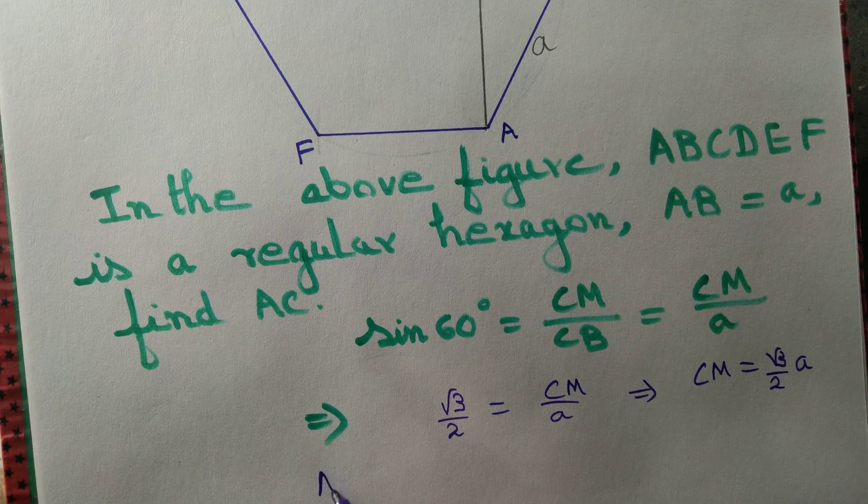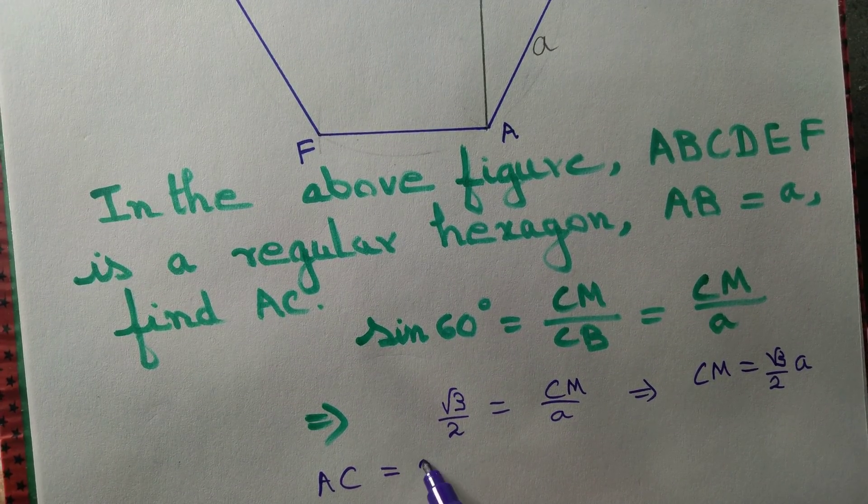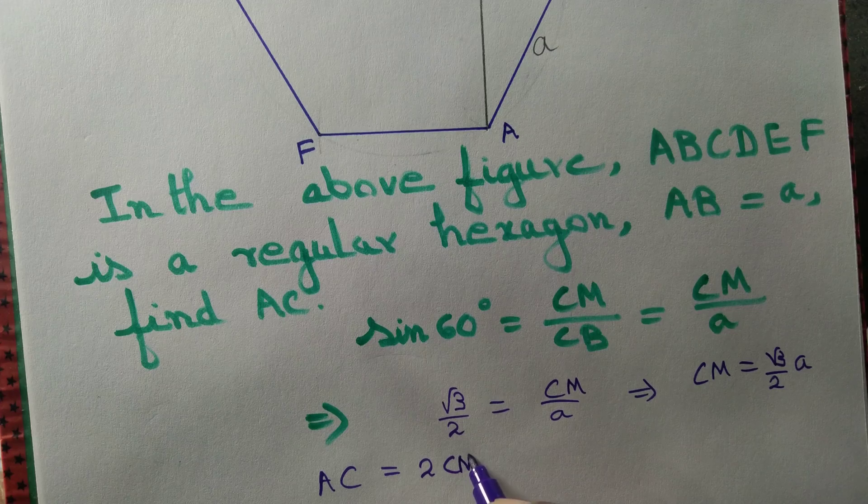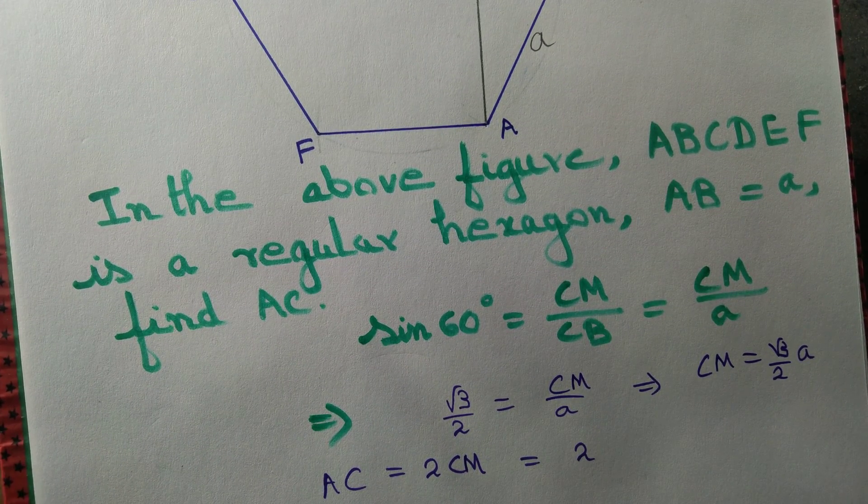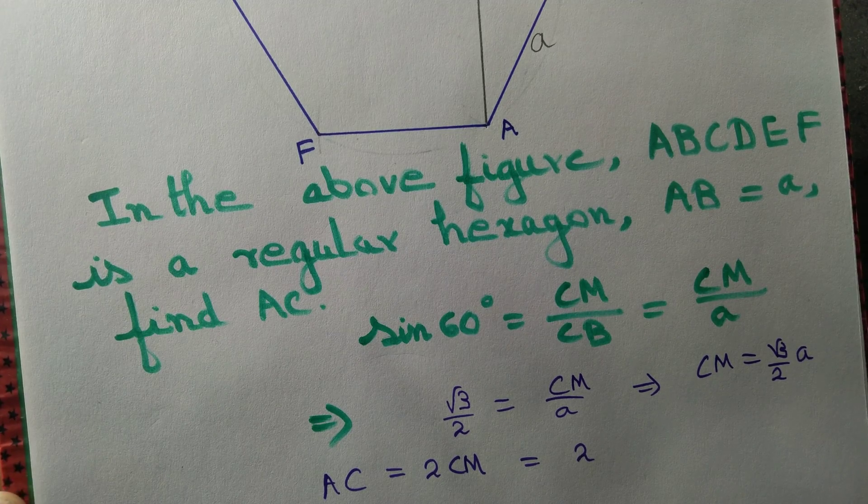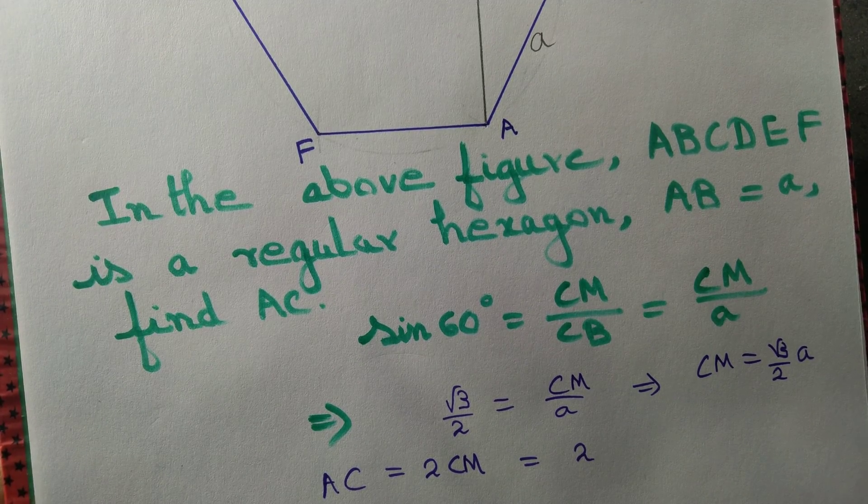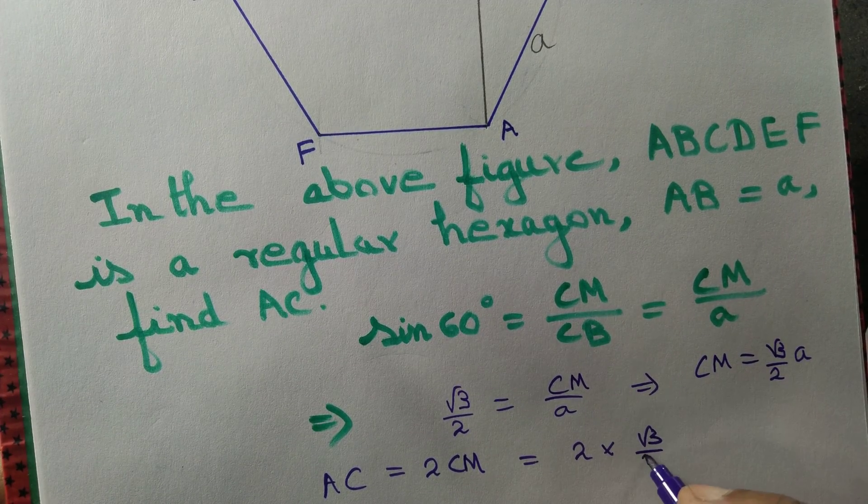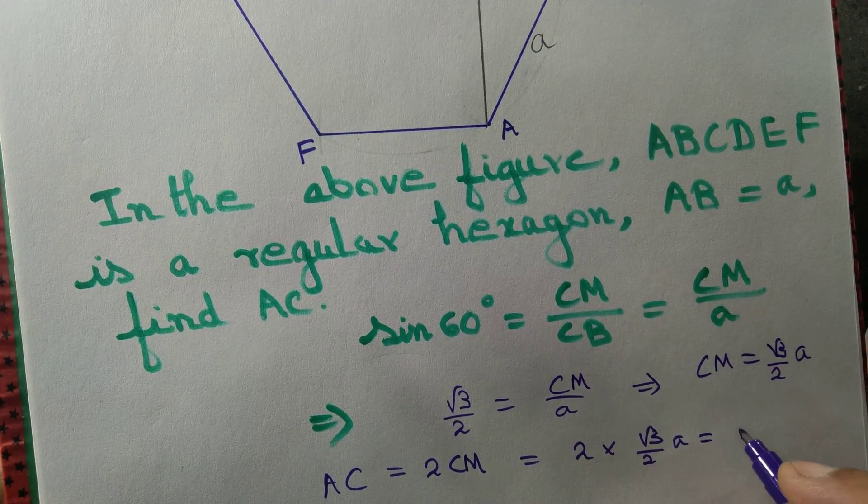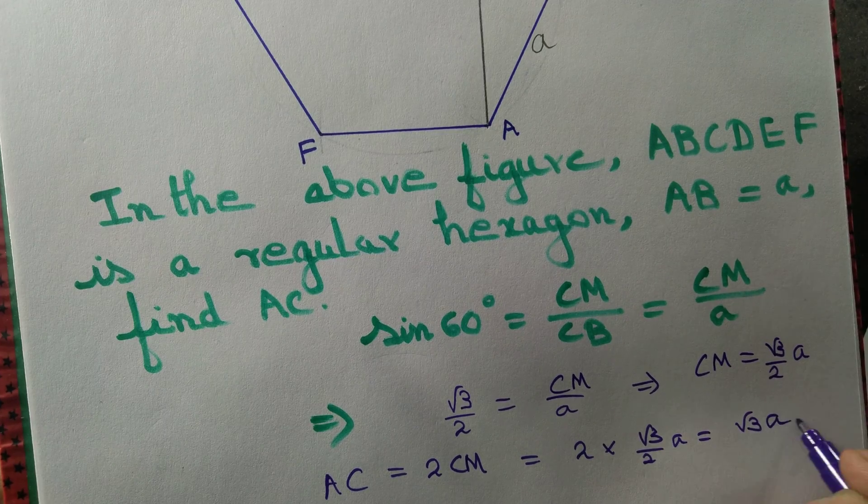AC equal to 2 times CM, and that is equal to 2 times root 3 by 2 A. That gives us AC equal to root 3 A.